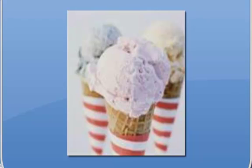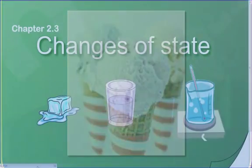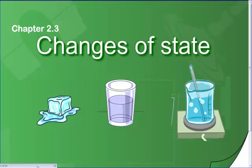Imagine yourself eating an ice cream cone in the summertime. It can be really tricky. In just minutes, that ice cream cone will start to melt all over your hand, and soon that solid ice cream becomes a liquid mess. As that ice cream melts, it goes through what's called a change of state. In this section, we're going to discover about the four changes of state shown in these figures.